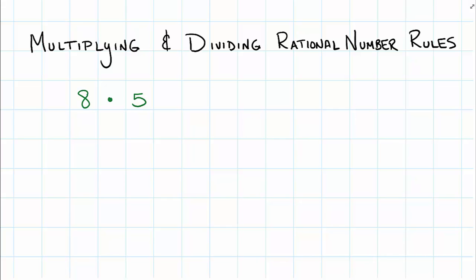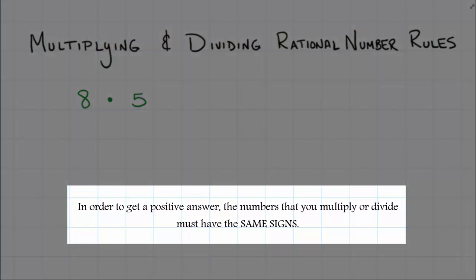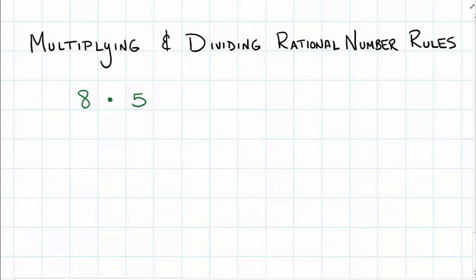First things first, let's get it out of the way that a positive times a positive or a positive divided by a positive is always going to still stay positive. Nothing changes just because we're moving up in the world in math. So a positive 8 times a positive 5 is still going to be a positive 4.